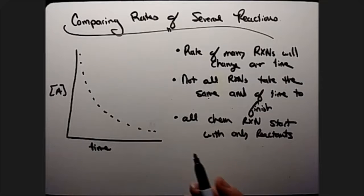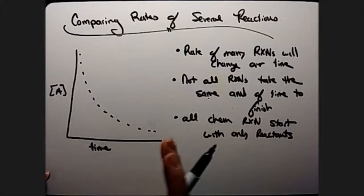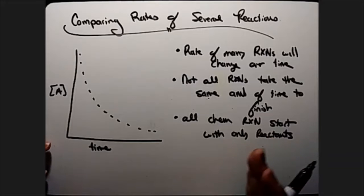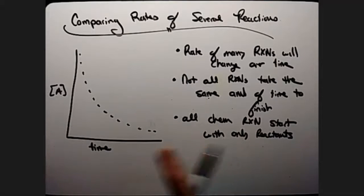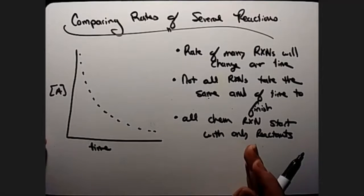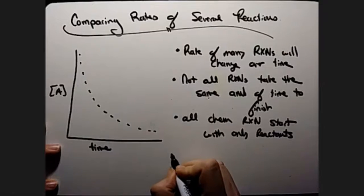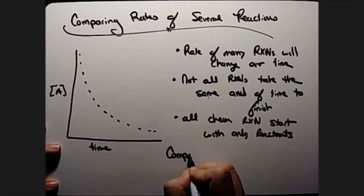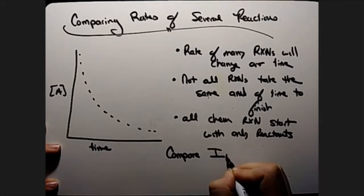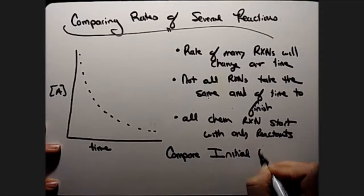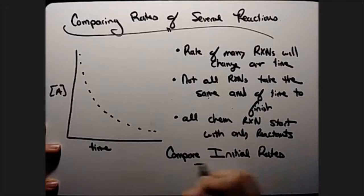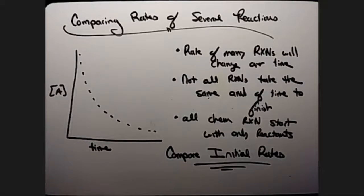So the most fair way to compare the rate of one reaction against another is, again, to compare apples to apples. What do they all have in common? They all have reactants, and they all have a starting time. So we usually only compare initial rates of reaction. It's really the only fair way of comparing one reaction against another.